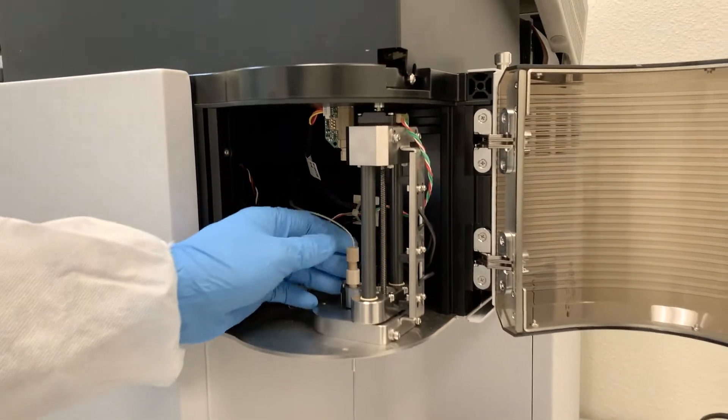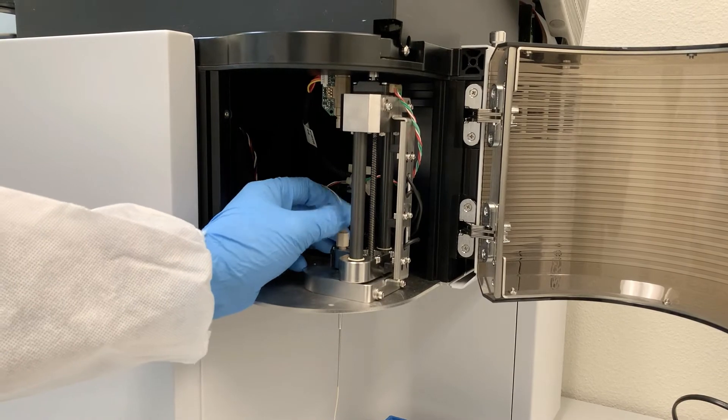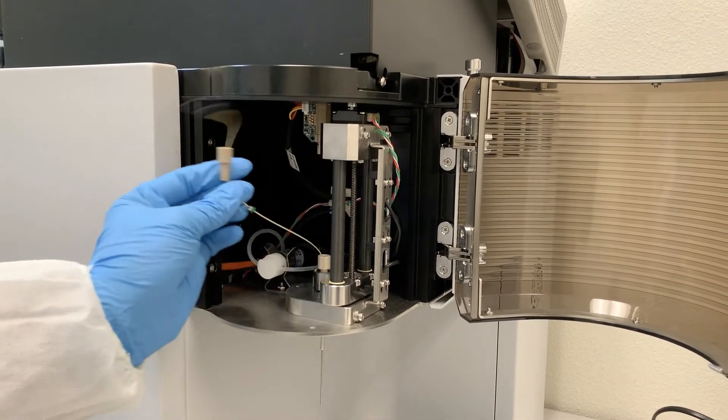Once disconnected, go to the other end and disconnect the beige nut. When loosening this one, be careful not to disconnect the second nut just beneath it, as that one needs to stay on the system.